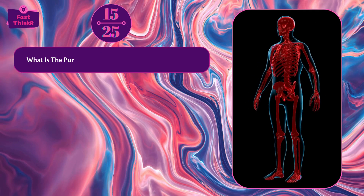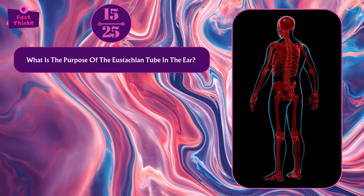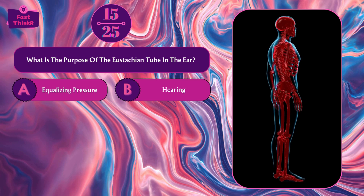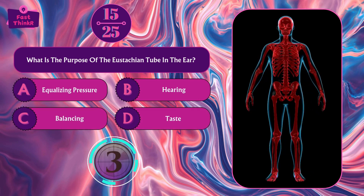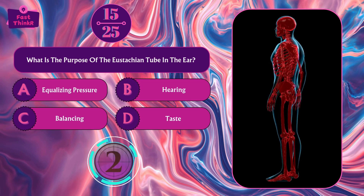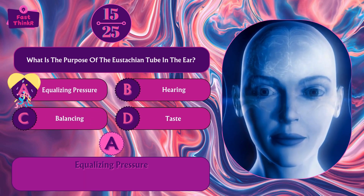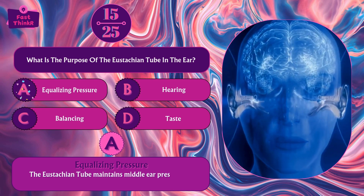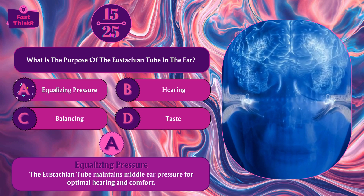What is the purpose of the Eustachian tube in the ear? Equalizing pressure, hearing, balancing, or taste? Option A — equalizing pressure. The Eustachian tube maintains middle ear pressure for optimal hearing and comfort.